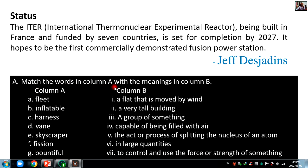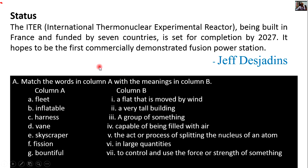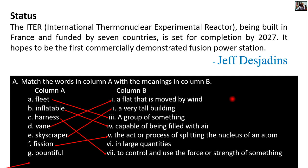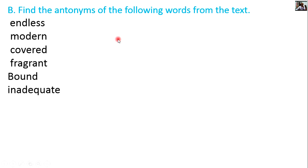Now match the word in column A with the meaning in column B. Fleet means a group of something. Inflatable means capable of being filled with air. Harness means to control and use the forces or strength of something. Vane is a flat piece that is moved by wind. Skyscraper is a very tall building. Fusion is the active process of splitting the nucleus of an atom. Bountiful means in large quantities.